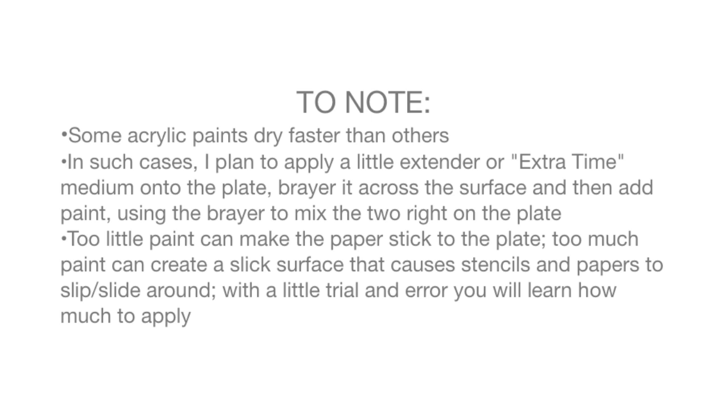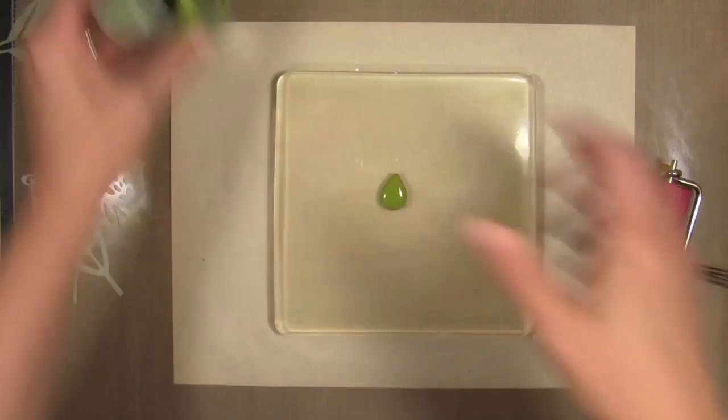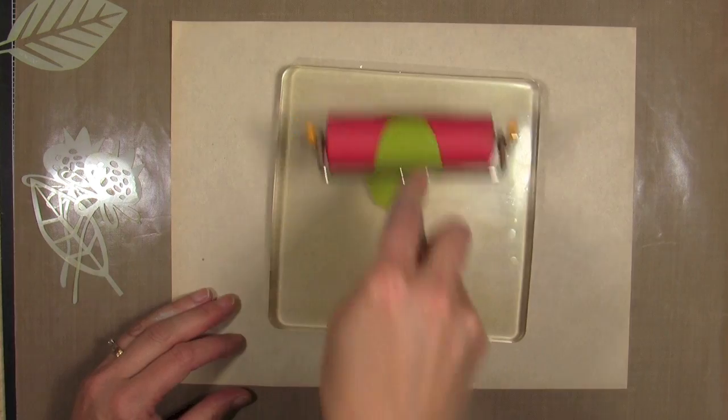That's still probably usable. I threw it away just so I could try again. But I think because this particular paint dries faster and some acrylic paints will dry faster than others, what I would do is take some extra time and put a dollop of extender onto the plate and brayer it across the whole surface, then add my paint and brayer the two right on the plate. Too little paint can make your paper stick or if the paint dries too fast. Too much paint will end up in a super slick surface where everything slides around, so you have to find that happy medium.